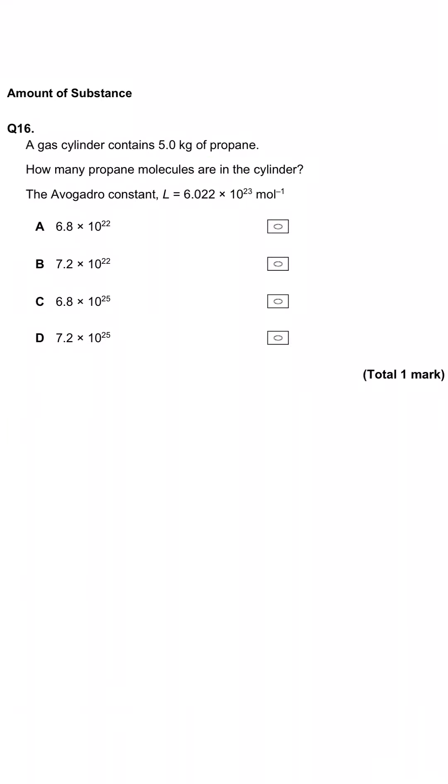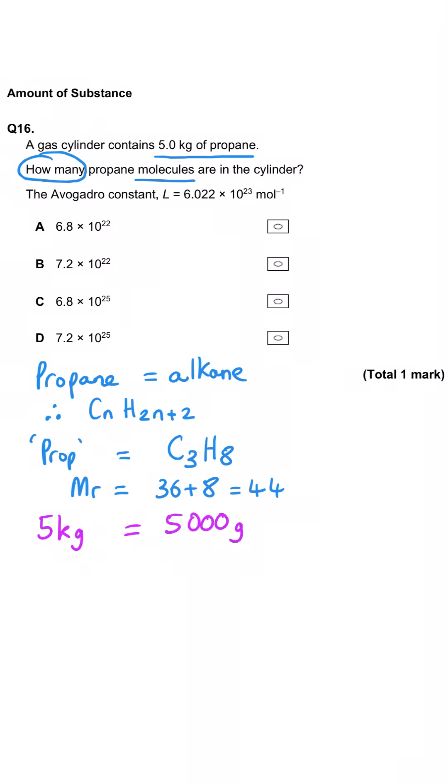Here we're being asked about a gas cylinder that contains five kilograms of propane, and how many propane molecules are in the cylinder. Propane is an alkane with the general formula CnH2n plus 2, which means propane, which has three carbons, will have eight hydrogens. When we work out the MR, it is 44. Five kilograms is 5,000 grams.